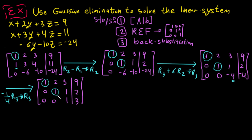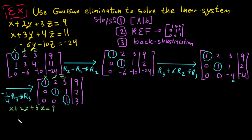We have now reached REF. The leading ones correspond to variables X, Y, and Z. Reading the equations: row 1 gives X + 2Y + 3Z = 9, row 2 gives Y + Z = 2, and row 3 gives Z = 3.